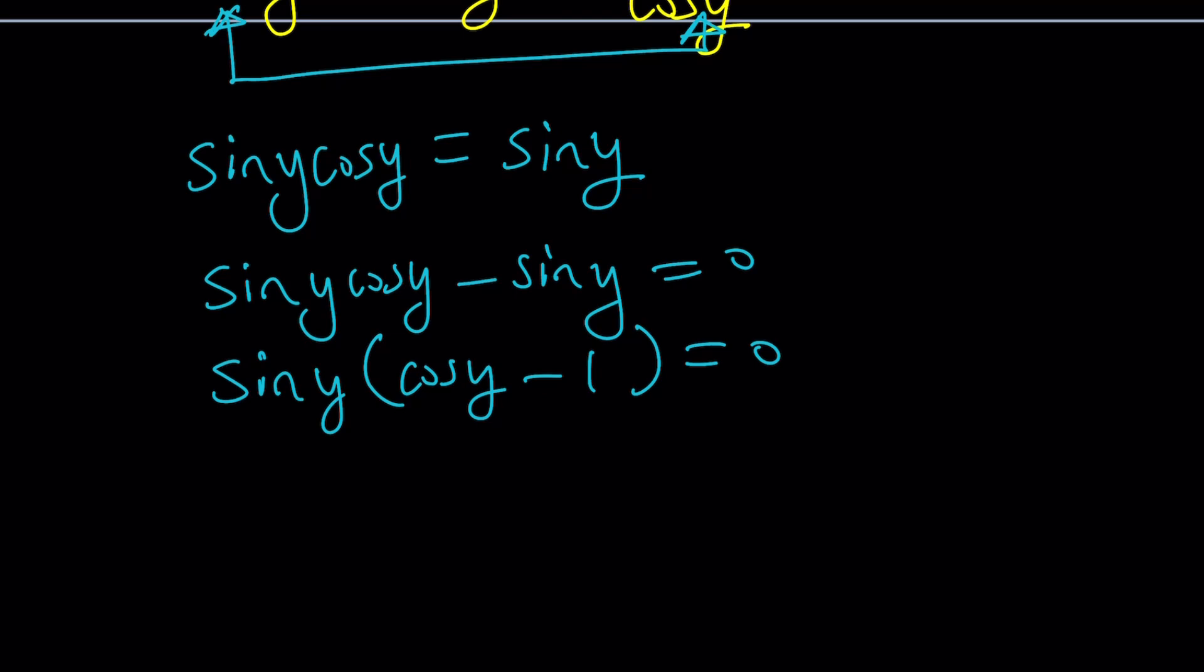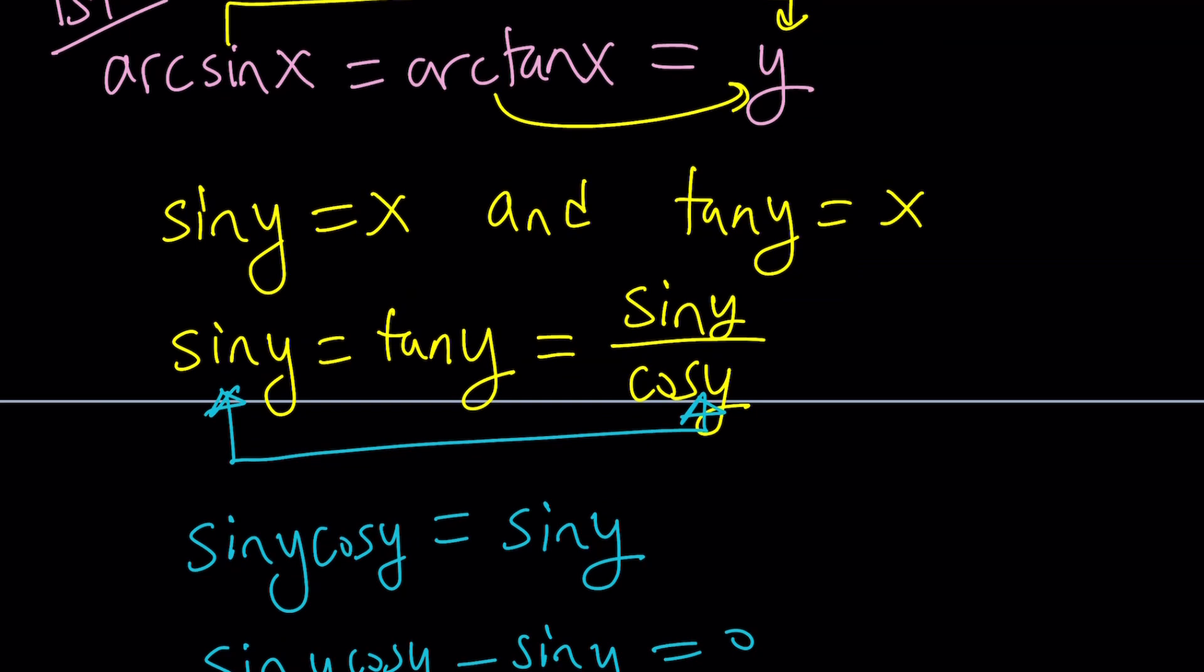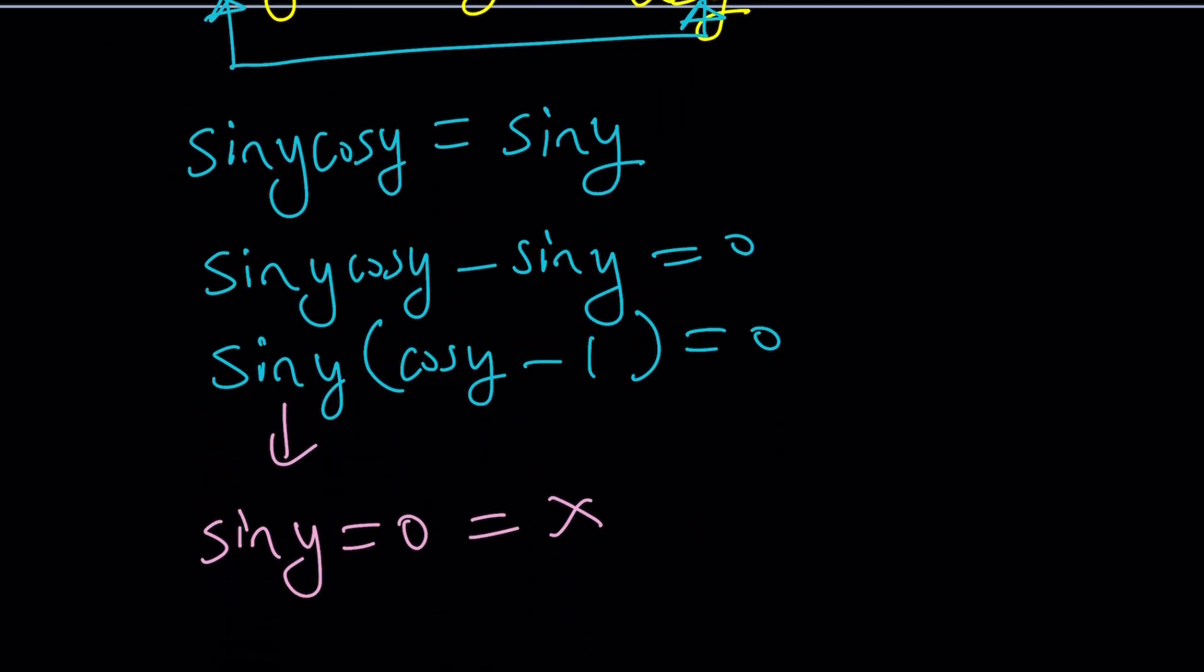Now, we get an interesting scenario. First of all, we have two factors, so sin y can be zero. And that's equal to x. And remember, we're trying to solve for x. So once we find sin y, we don't have to worry about y because we need x. So x equals zero. Good.